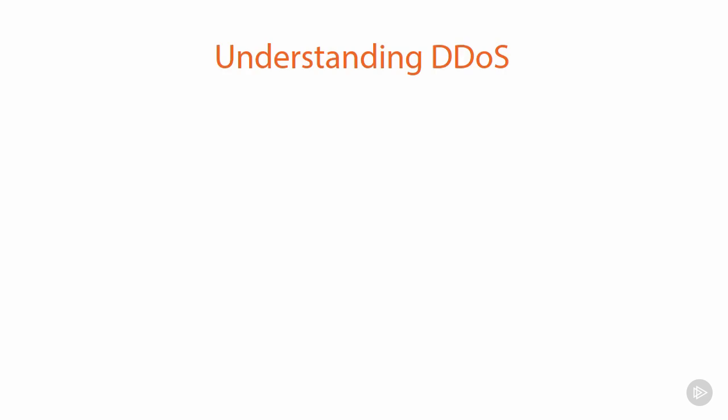Let's bring our pizza shop back in here again. Our pizza shop obviously has a phone, except in order to be more resilient to large volumes of traffic — for example, it could just be a popular pizza shop — they've put in multiple phones. They've now got several phone lines in the pizza shop, which is fairly representative of many pizza shops today.